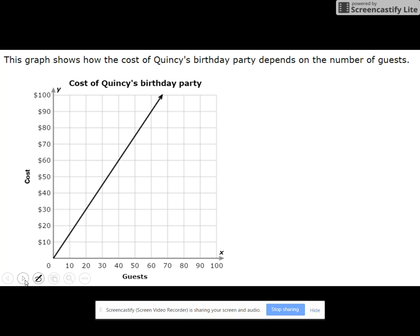So cost per guest, by the way, this is a y-axis. Money is always on the y-axis. If you have time given, time is always on the x-axis. But this time, you don't have time, so we just get money over guests.